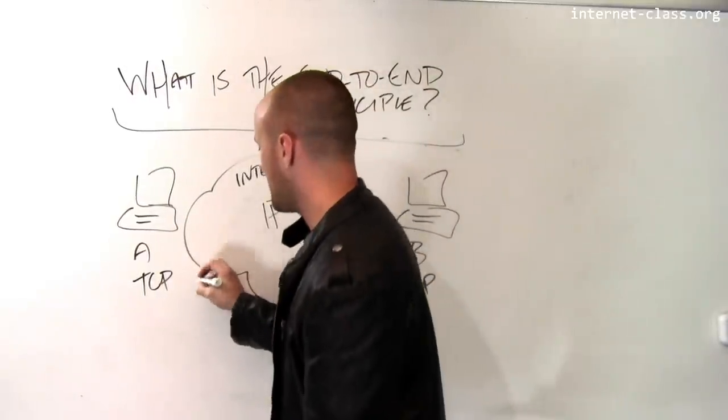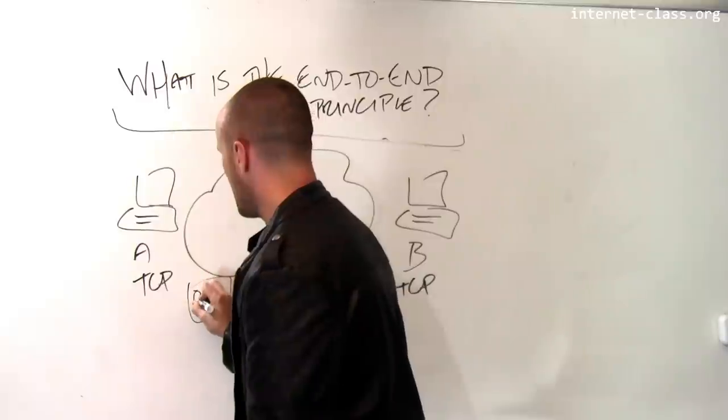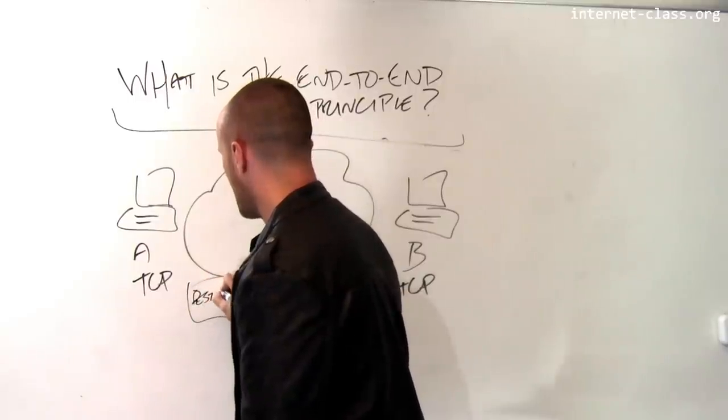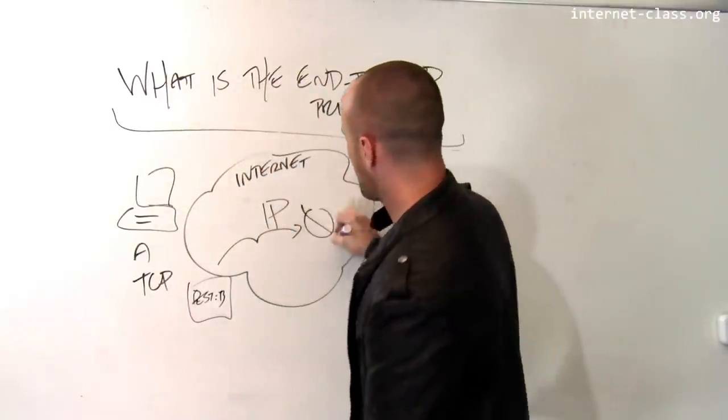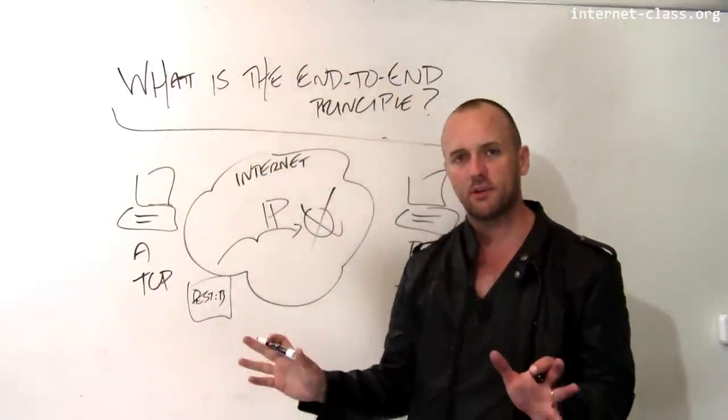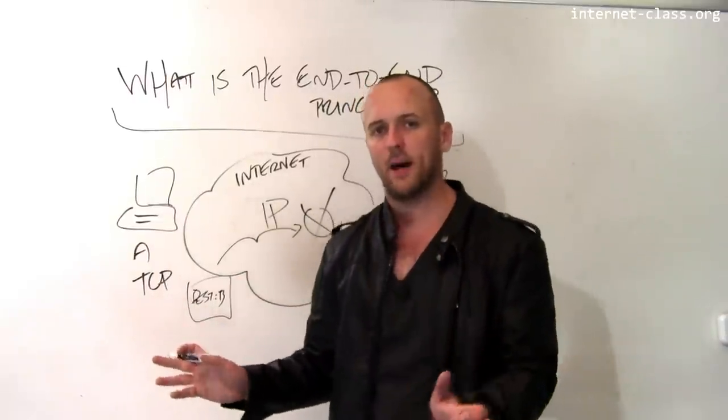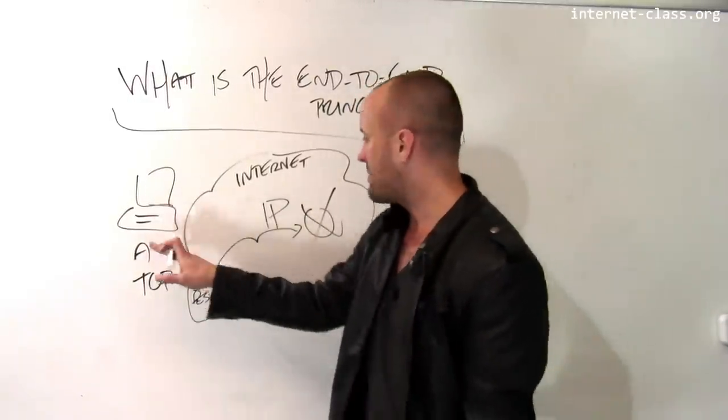So for example, if A sends a packet with destination B, and that packet starts to be transmitted through the network, and at some point, let's say that packet is dropped—bad stuff happens, packets get dropped.